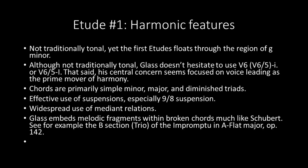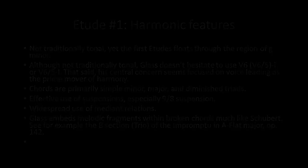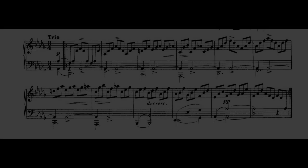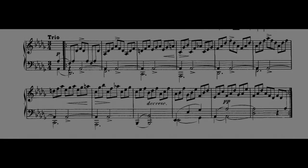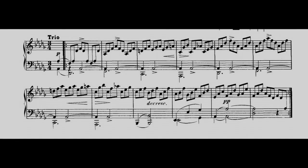Glass embeds melodic fragments within these broken chords, much like Schubert did in his compositions. For example, in the B section — or the trio, more properly — of Schubert's Impromptu in A-flat major, Op. 142, we hear a very similar kind of melodic and harmonic structure. The harmony is not the same, but the way the melody is embedded within a broken chord harmonic structure is very similar to what Glass is doing. Let's take a listen to that very briefly.